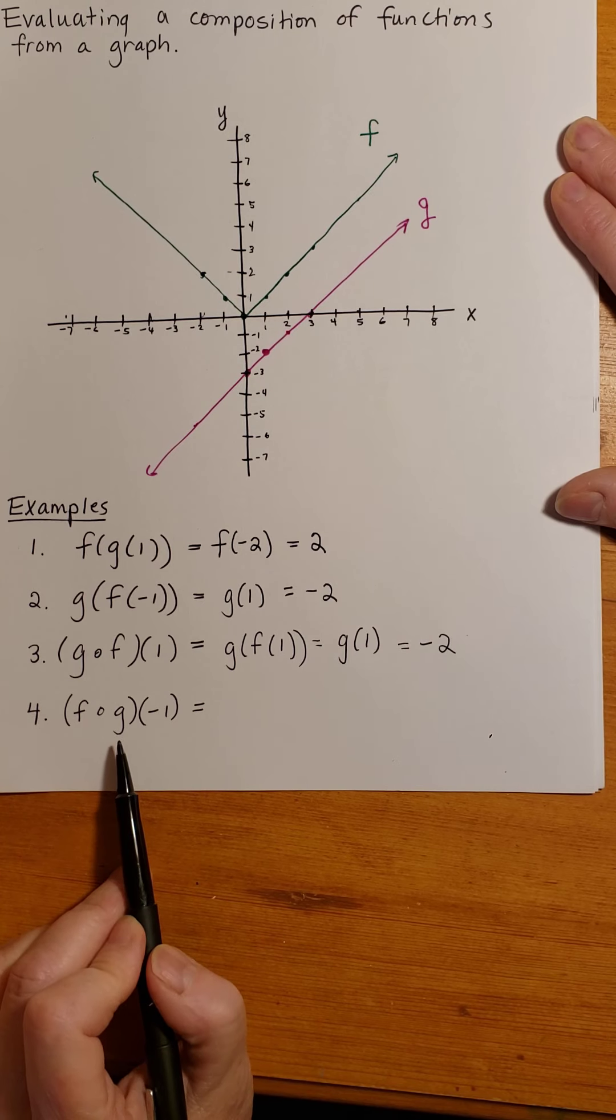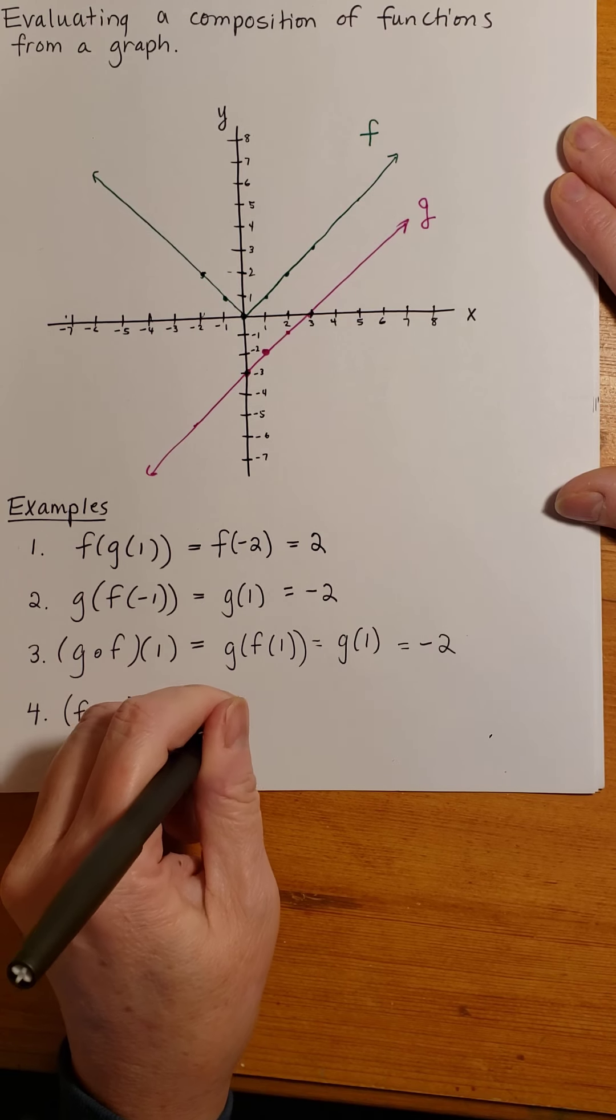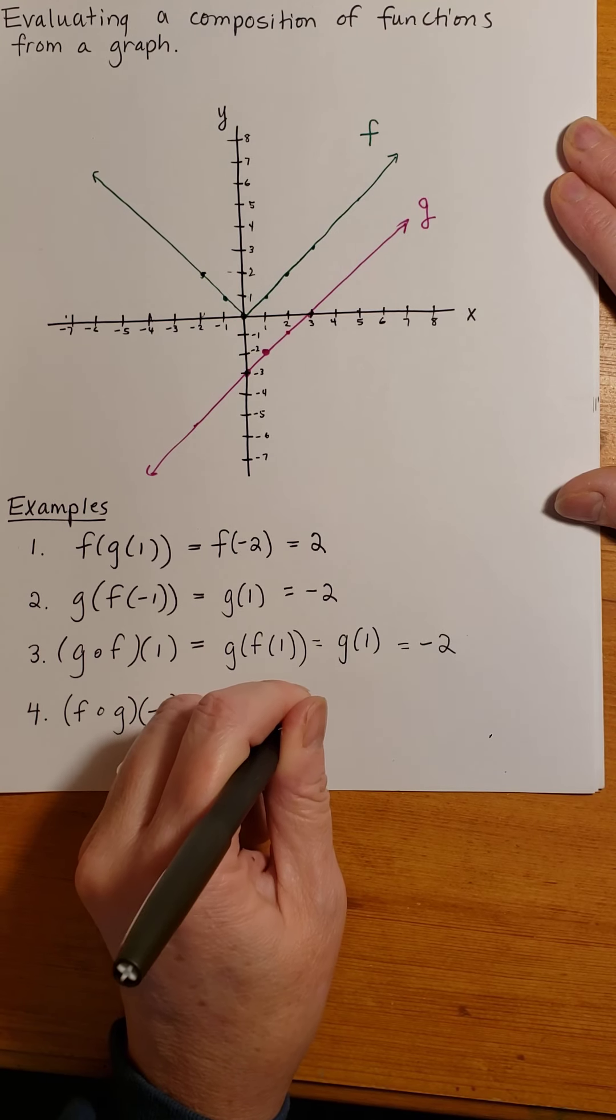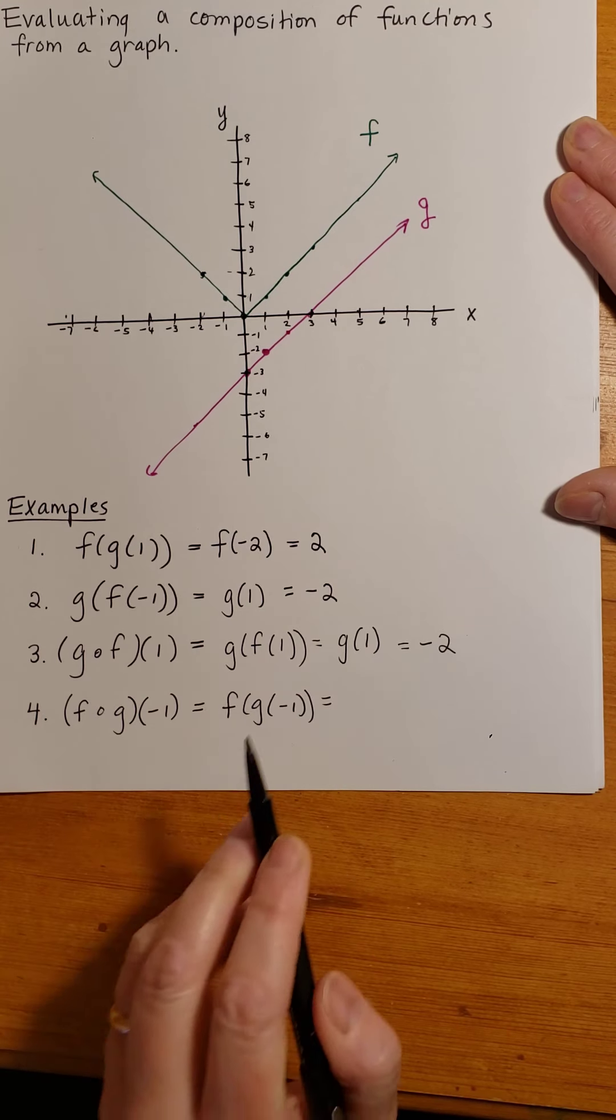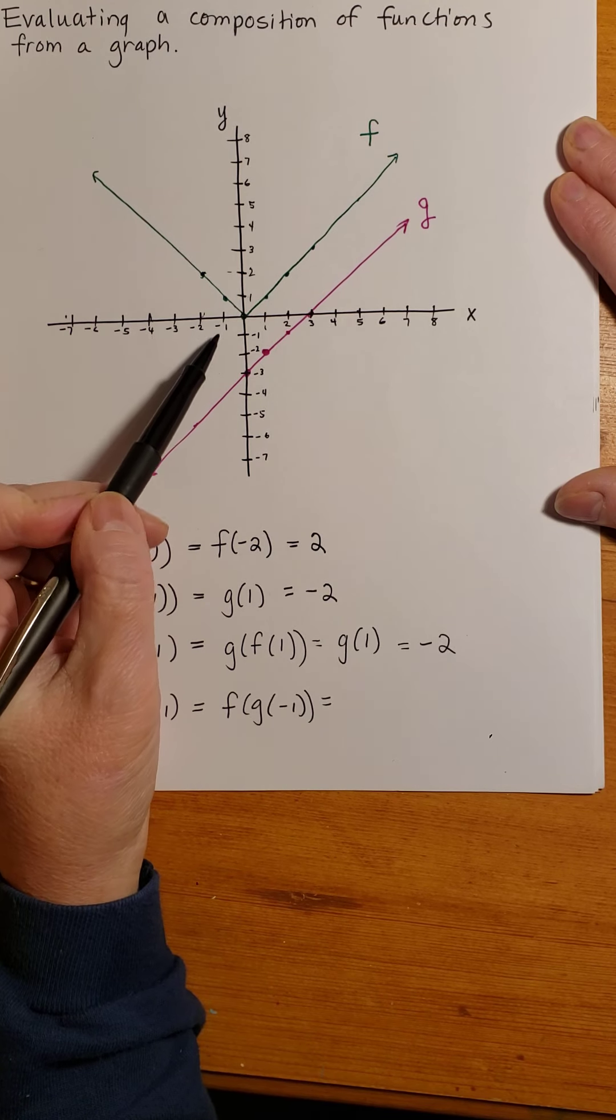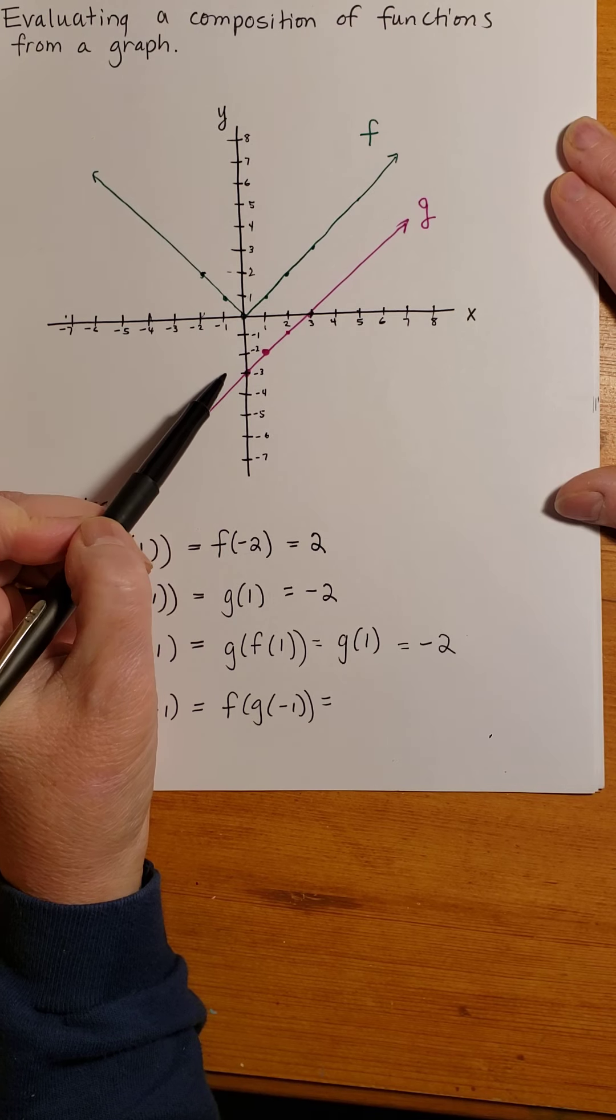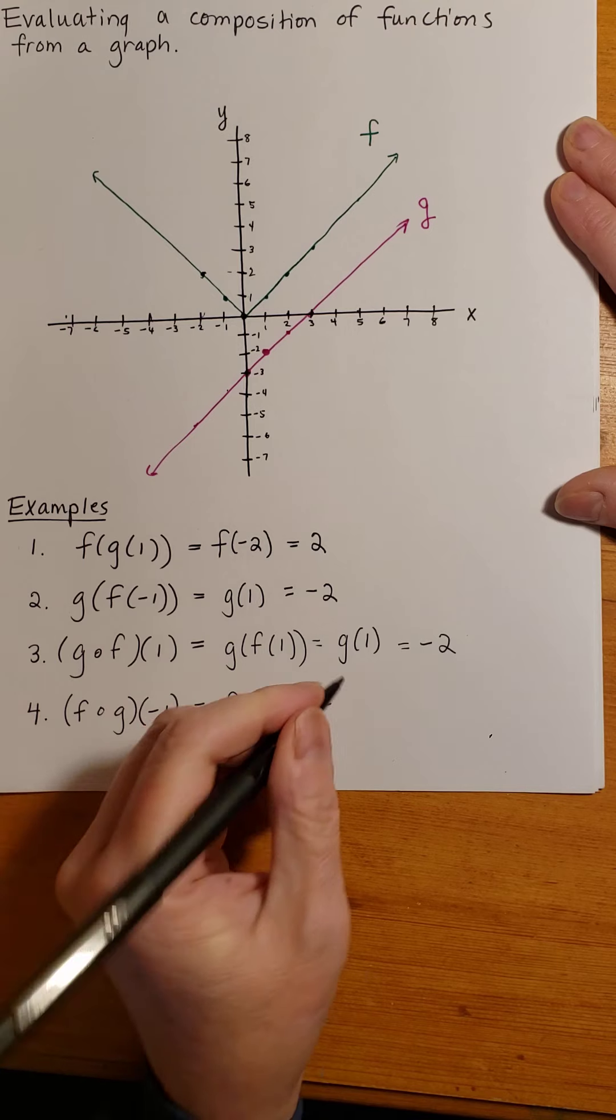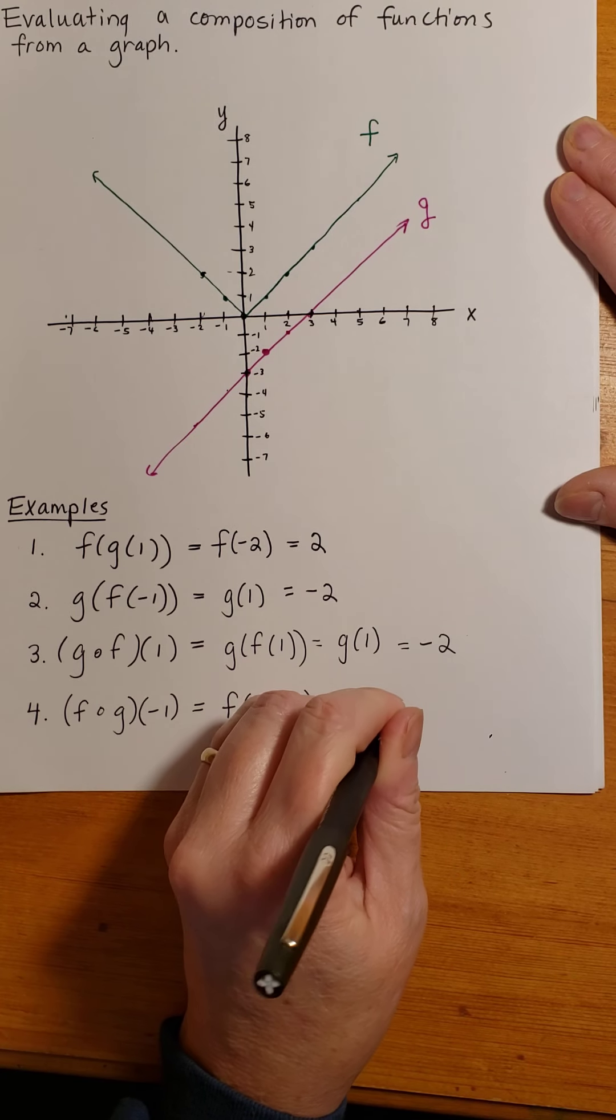f composed with g of negative 1 is defined as f of g of negative 1. I start with the inside function. I'm evaluating g at negative 1, and that takes me down the vertical path to the function, and then the horizontal path to the y-axis takes me to negative 4. So this is f of negative 4.